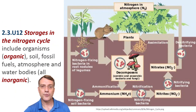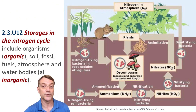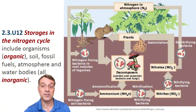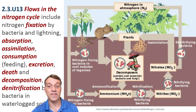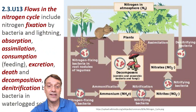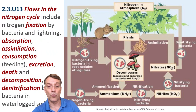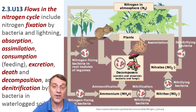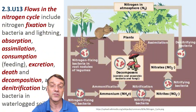Similarly, the nitrogen cycle includes organic storages in organisms and inorganic storages in soil, fossil fuels, the atmosphere, and bodies of water. Most nitrogen exists as atmospheric nitrogen gas, which most organisms can't use directly. Flows in the nitrogen cycle include nitrogen fixation by bacteria and lightning, absorption, assimilation, consumption, excretion, death, decomposition, and denitrification. These processes convert nitrogen between forms that organisms can use and forms that they cannot, and back to usable forms again.